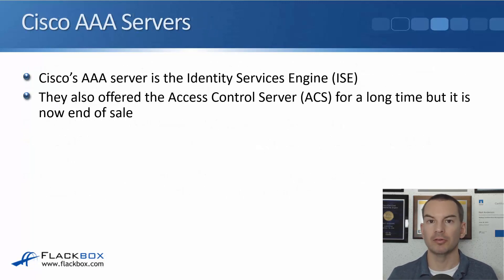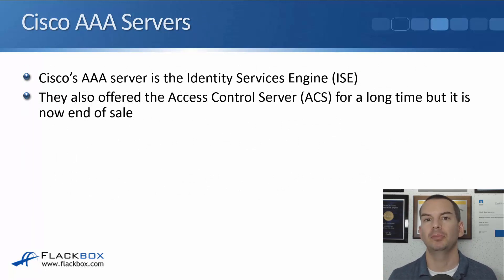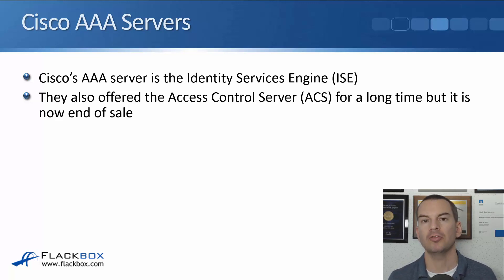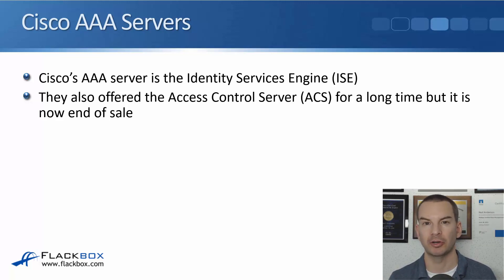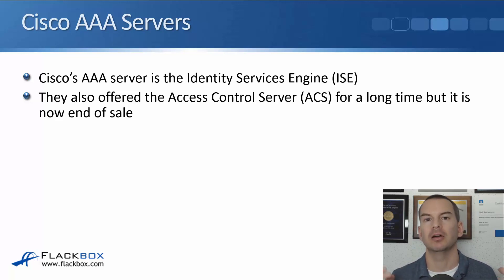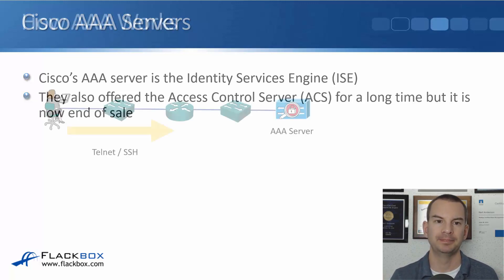Cisco, as well as many other vendors, has a AAA server. Cisco's AAA server is the ISE — the Identity Services Engine. They also used to have the ACS, the Access Control Server, which was available for many years but has gone end-of-sale. So the current AAA server from Cisco is the ISE.